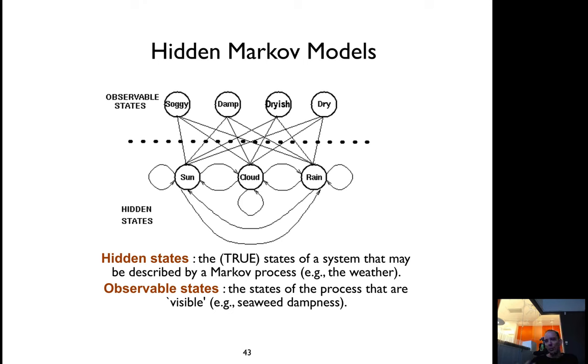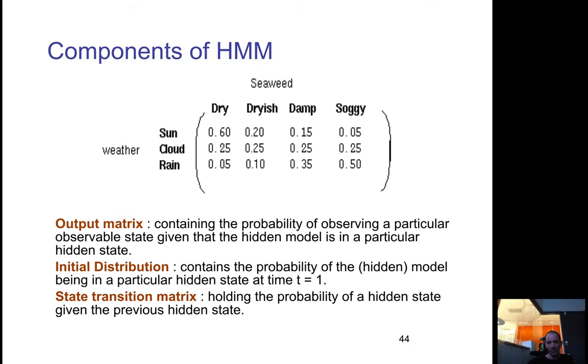Then you're trying to recreate these probability patterns from only the observable states. You have a series of observable states and you try to generate all these probabilities—both the emission probabilities, which is how the hidden states generate these observable states, and also the transitions between the hidden states. For instance, if it's sunny, it's 60% chance to be dry and 20% to be dryish. If it's cloudy, it's equal probability to be anything. If it's rainy, it's 50% chance to be soggy.